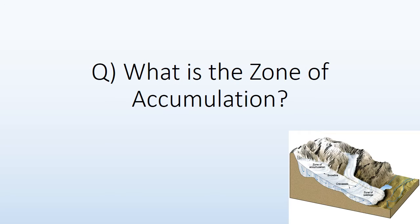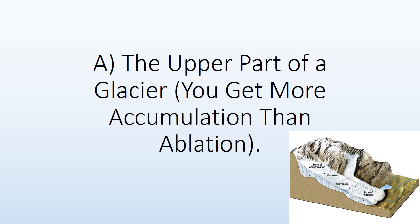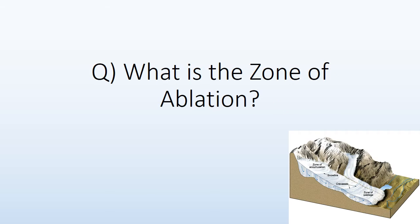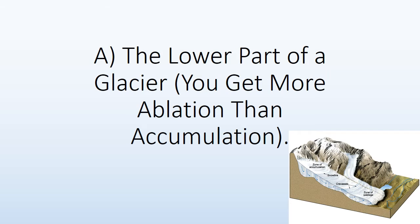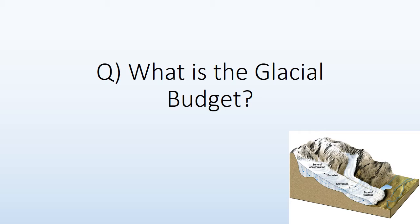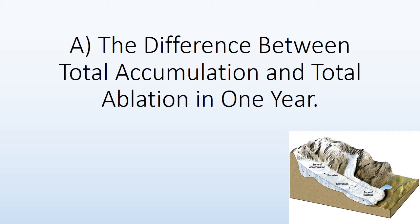The zone of accumulation is the upper part of the glacier, where you get more accumulation than ablation. The zone of ablation is the lower part of the glacier, where you get more ablation than accumulation. The glacial budget is the difference between total accumulation and total ablation in one year.